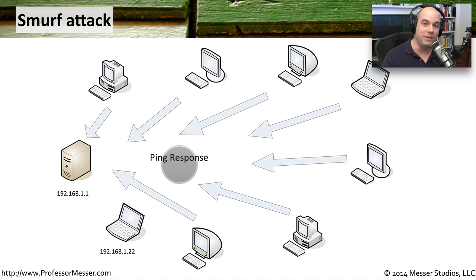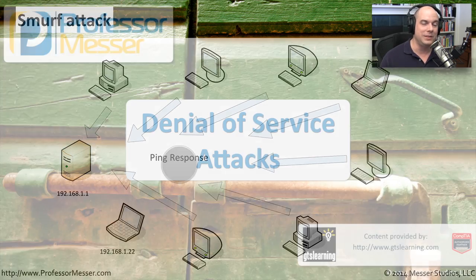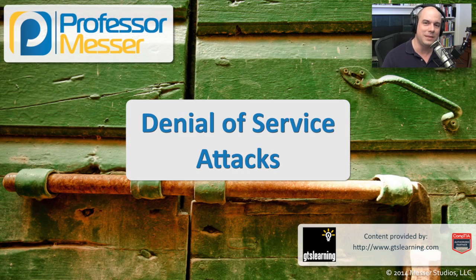The Smurf attack was a very common early method of denial of service, and it was very easy — if you were on that subnet, you could take down one of these big servers all with a single packet.